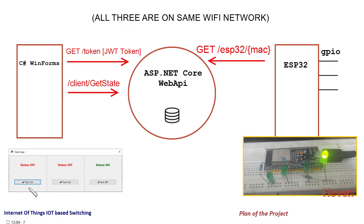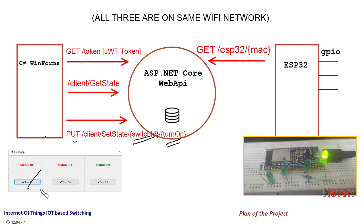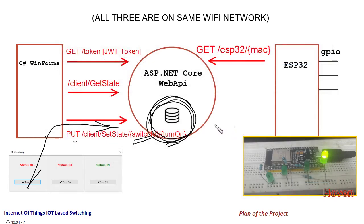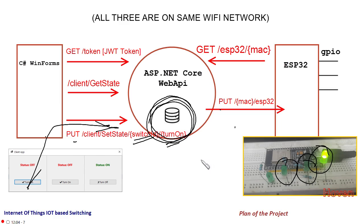When a user wishes to turn a switch OFF, the WinForms application sends a PUT request to the database server with the ID of the switch along with TRUE or FALSE. This PUT request reaches the ASP.NET Core Web API, which makes an alteration to the switch state in the database, and immediately afterwards sends a PUT request to the remote device to make the corresponding change to the state of the LEDs. The whole state is stored in the database, and the WinForms application sends state changes to the server, which stores them and forwards the request to the remote device.